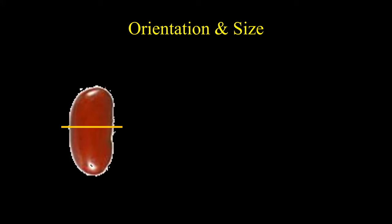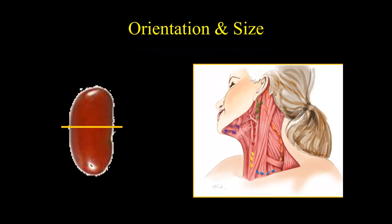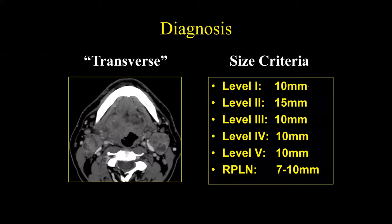Lymph nodes are shaped like a kidney bean, but their orientation differs by level. Levels 2, 3, 4, and 5 have a craniocaudal orientation, while level 1 and supraclavicular lymph nodes are oriented differently. The size criteria we use: 10 mm for level 1, 15 mm for level 2, 10 mm for levels 3, 4, and 5, and 7–10 mm for the retropharyngeal lymph nodes.